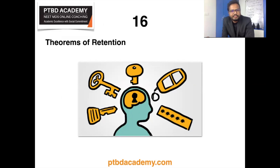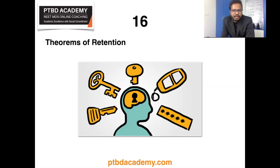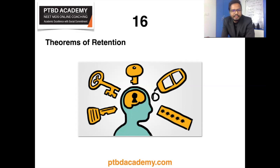Theorems of retention: there are totally 10. The first 9 theorems were given by Rydel and the 10th was given by Morita. Theorem 1: teeth that have been moved tend to return to their former positions. Theorem 2: elimination of the cause of malocclusion will prevent recurrence. Theorem 3: malocclusion should be overcorrected as a safety factor. Theorem 4: proper occlusion is a potent factor in holding teeth in their corrected positions.